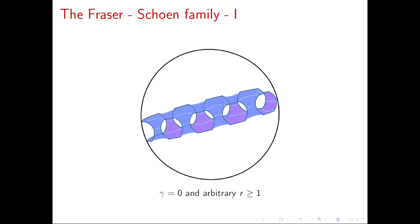The first non-trivial examples were found by Fraser and Schoen. They showed that for each natural number R, there exists a free boundary minimal surface in the ball that has genus zero and R boundary components. In the picture, we see the two sides of the surface in different colors, with the boundary components as blue lines. The surface looks very much like two disks joined by lots of necks around the boundary — the necks look a bit like half catenoids.